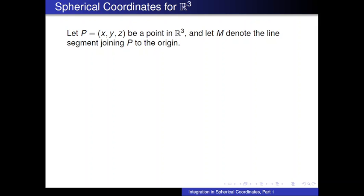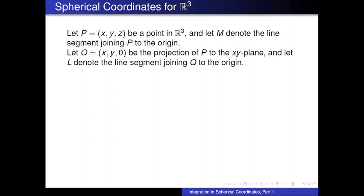Let P be a point in space with rectangular coordinates x, y, and z. Let M denote the line that joins P to the origin. To bring more information into the mix, let's project P to the xy-plane. If P lives above the xy-plane, there's a point directly underneath it in the xy-plane — we'll call that Q. Q has the same x and y coordinates as P but z equals zero. We'll let L denote the line segment joining Q to the origin, similar to the L we used in polar coordinates.